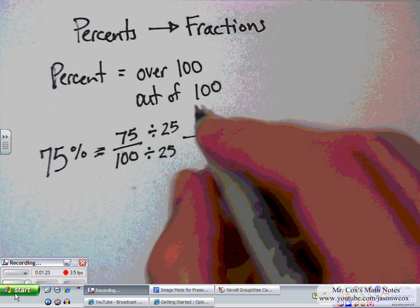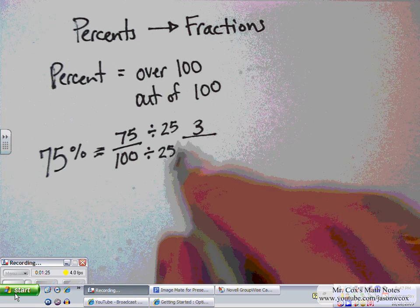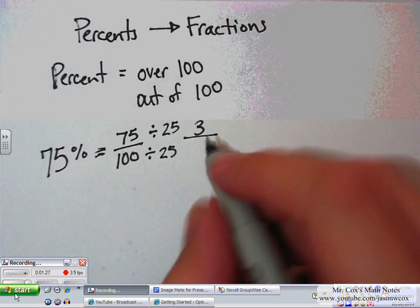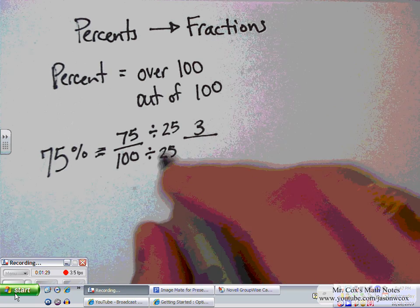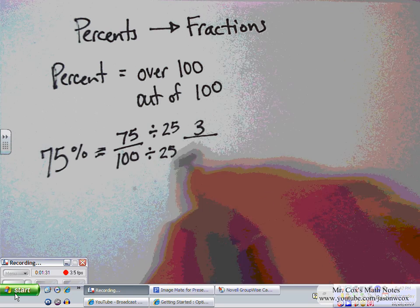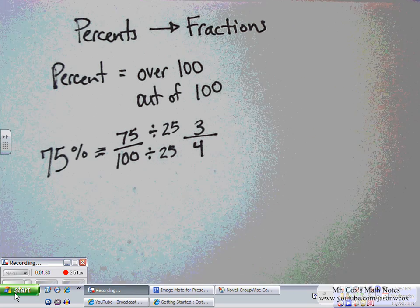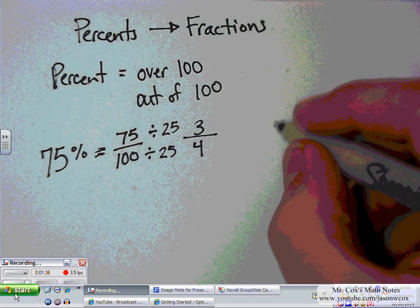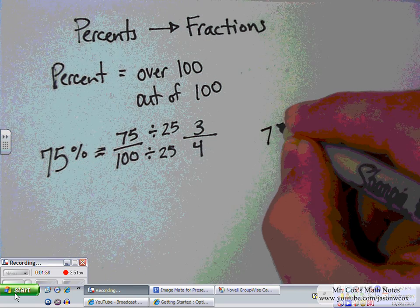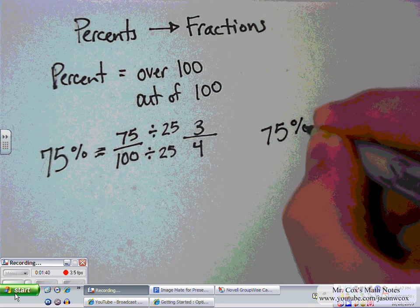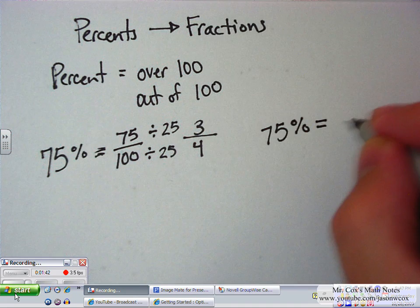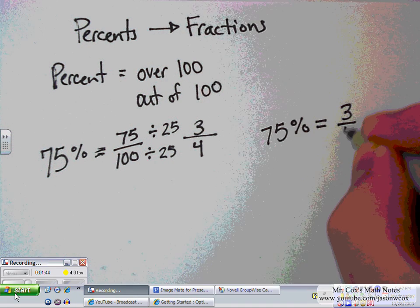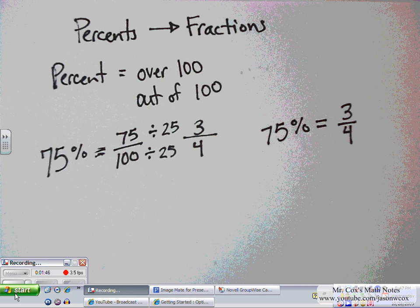75 divided by 25 would be 3. And 100 divided by 25, just like there are how many quarters in a dollar? Four. So I end up with 75% as equivalent to 3 over 4 or 3 fourths.